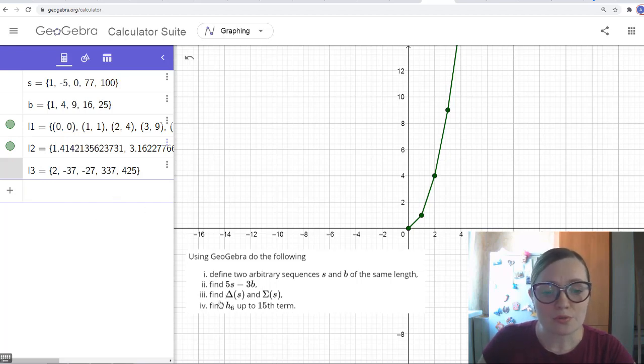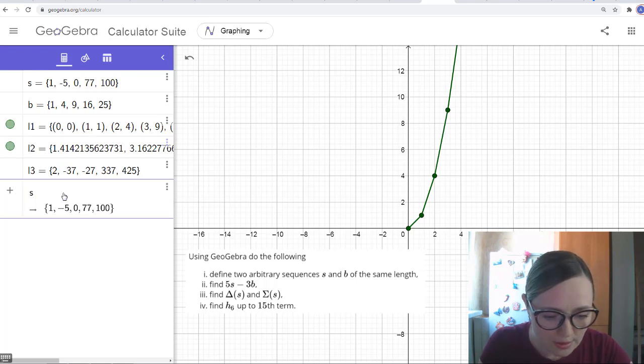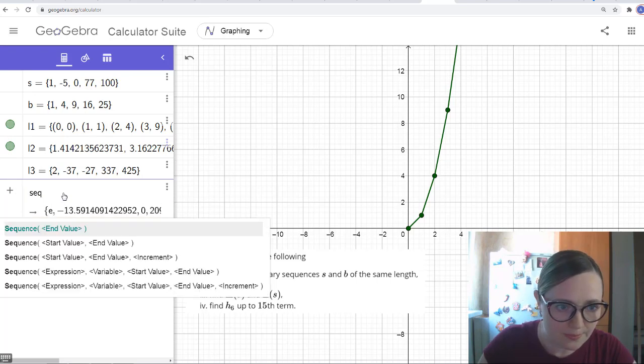And next task, we need to find delta, so the difference, and summations of a given sequence. And there are no commands in GeoGebra, but this is quite simple, in fact. If we use the term sequence, let's say we want to find delta of s of the first sequence, what we can do, we can start from sequence, and let's choose this one.